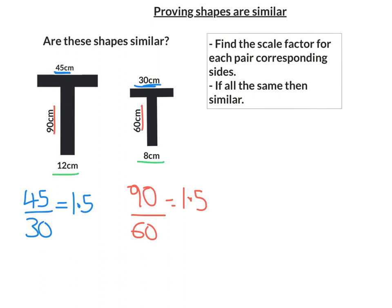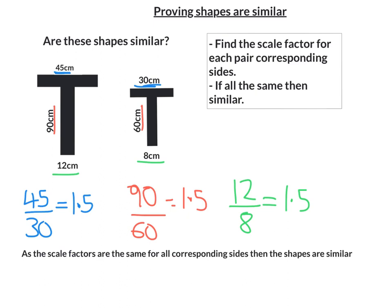Let's then check for these last two here, the bottom part. 12 over 8 is 1.5 as well. So they all have 1.5, so yes, they are similar shapes. And we would finally need to write, as the scale factors are the same for all corresponding sides, then the shapes are similar.